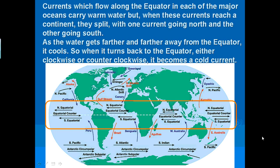So focus on the orange part of the diagram and what's inside of it, right there at the equator. Currents which flow along the equator in each of the major oceans carry warm water, but when these currents reach the continent, they split, with one current going north and the other going south. As the water gets further and further away from the equator, it cools. So when it turns back to the equator, either clockwise or counterclockwise, it becomes a cold current.